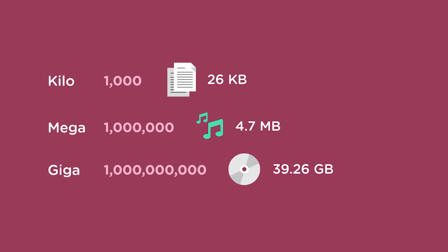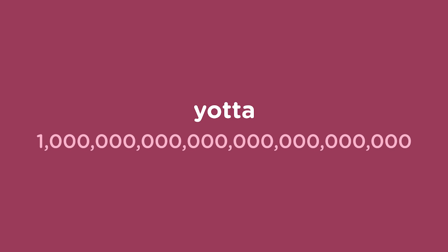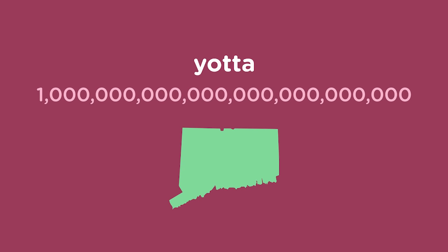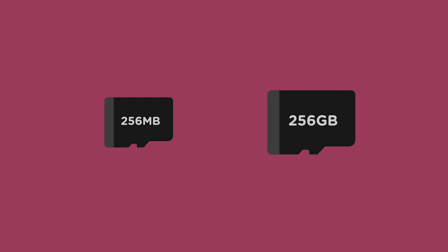There are more prefixes for even larger values. The largest widely recognized prefix is yotta. A yottabyte is one septillion bytes, or one followed by 24 zeros. This is about 45 trillion Blu-ray movie discs, or 1,000 years of worldwide internet traffic. To house one yottabyte of data, you would need a data center roughly the size of the state of Connecticut. Back to that micro SD card — today, you can buy a 256 gigabyte card for the same price you would have paid for a 256 megabyte card 10 years ago. The card you buy today stores 1,000 times the amount of data.